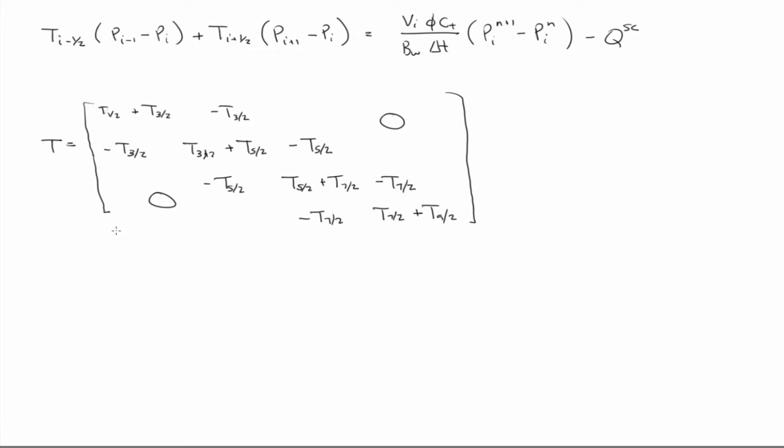And these are zeros. So I haven't said anything about boundary conditions yet. So this will be our matrix for the four-grid block system. This matrix is singular, meaning if it was an implicit solution, we couldn't solve this. We couldn't invert that to solve it. So you have to apply the boundary conditions to be able to solve it.